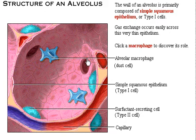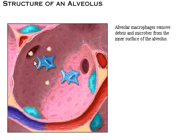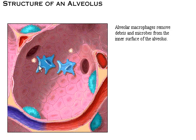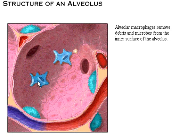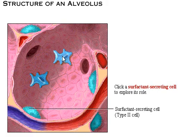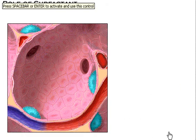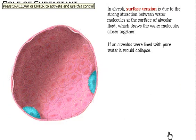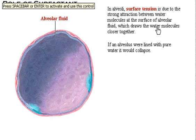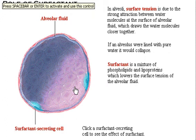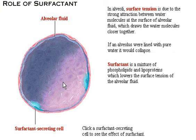The macrophages are responsible for non-specific defense. Microorganisms entering the airways are engulfed by the macrophages and cleared. The surfactant-secreting cells regulate the surface tension of the alveoli and prevent the alveoli from collapsing.